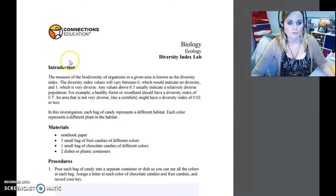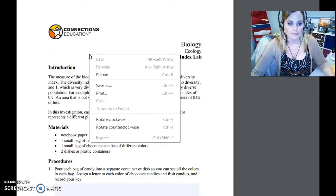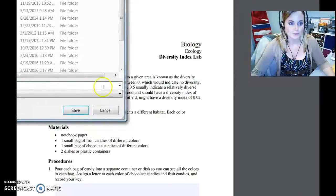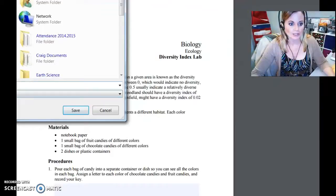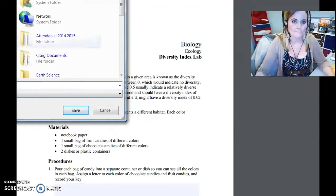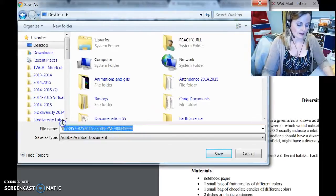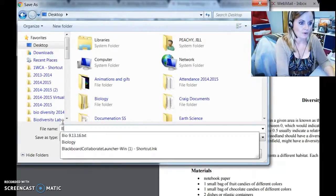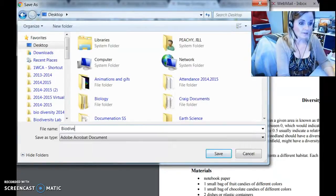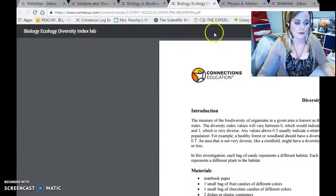So the best way to do this is to right-click on the document and then select Save As. When that happens, you can save it to an easily identifiable location, such as your desktop. And perhaps I will call this Bio Diversity Portfolio Mrs. Peachy. It does help to put your name on it.